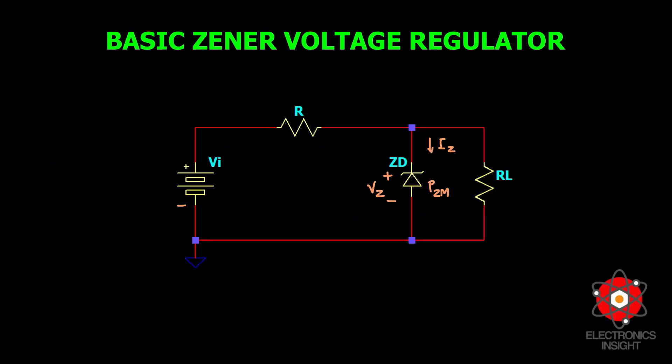This is a basic Zener voltage regulator where we have kept both the input voltage and load resistance RL fixed and solved one problem in the previous video. The video link is shared in the description box and the 'i' button. Please watch that video for a basic understanding of the Zener voltage regulator before we move to the next step, where we vary one parameter and observe whether the Zener diode continues to act as a voltage regulator.